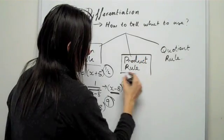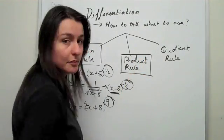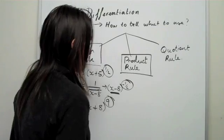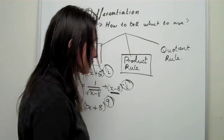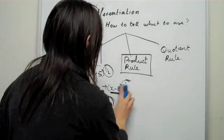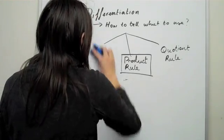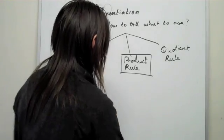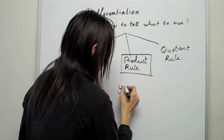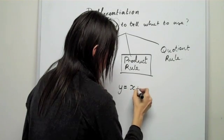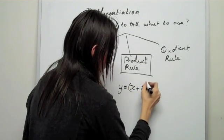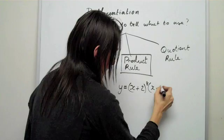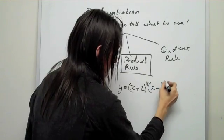Well, basically your product rule is a product—it's a multiplication of variables. For instance, if you can't be bothered expanding two sets of brackets together, say you have y equals (x + 2)^8 times (x - 1)^9.